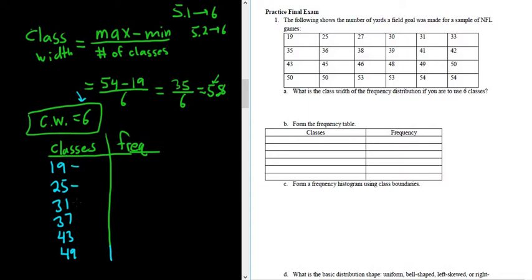Then you put dashes. And then to figure out the number that's going to go here, it's the number right before 25 with no decimal places, so 24. Then you add the class width to get the rest. So 24 plus 6 is 30, plus 6 is 36, plus 6 is 42, plus 6 is 48, and then plus 6 is 54.